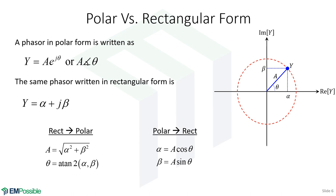To go from polar to rectangular, that's the easiest. The real part of the phasor is the magnitude times cosine of the angle, and the imaginary part of the phasor is the amplitude times the sine of the angle.